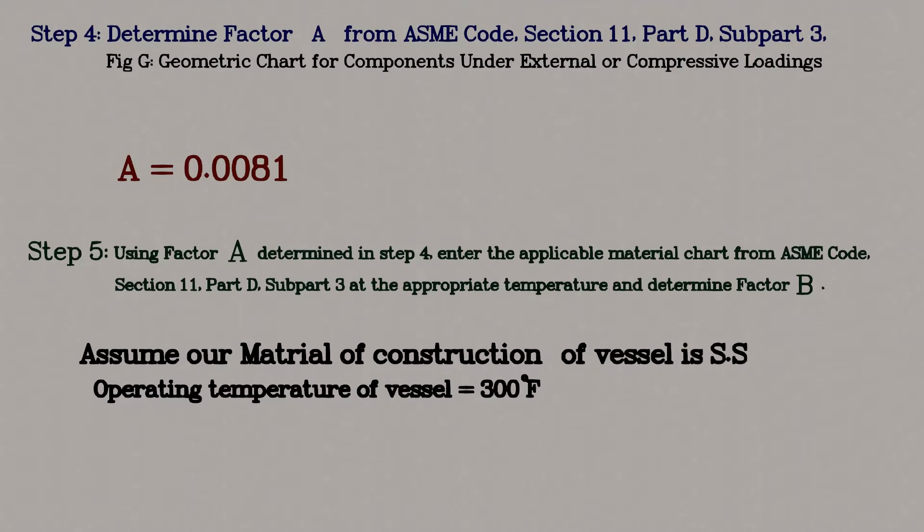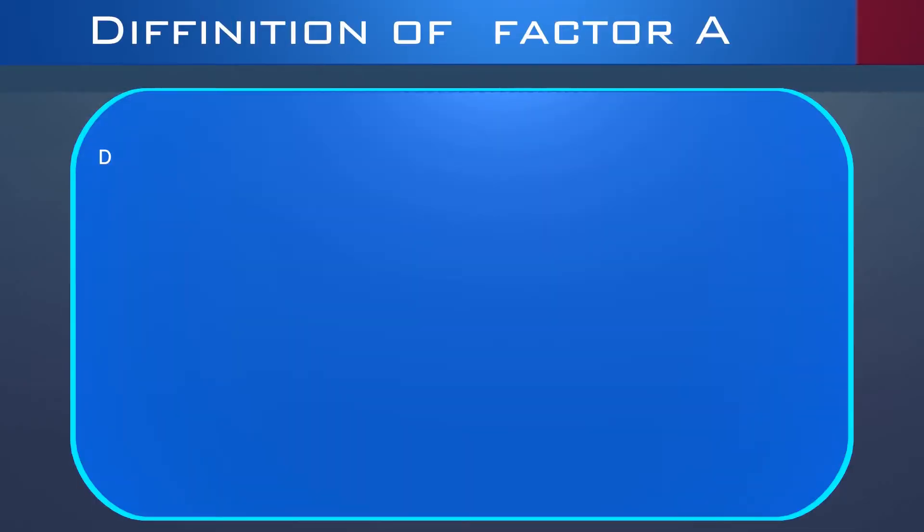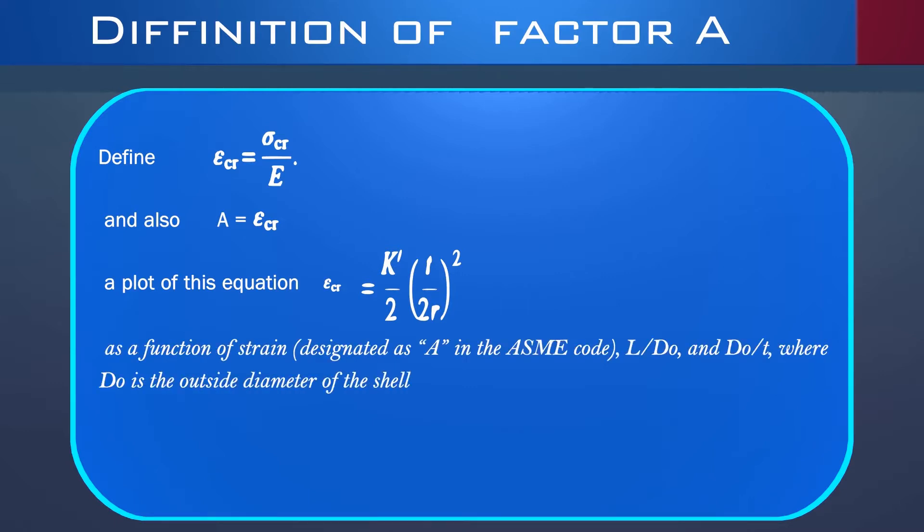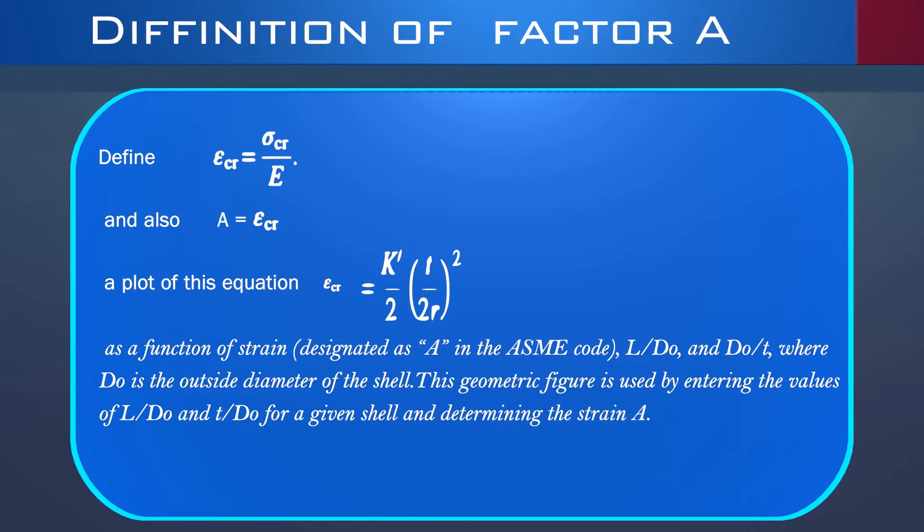Before the iteration of these factors A and B, let's briefly define these factors. A detailed practical perspective and derivation will be provided in another video. We can define strain as equal to uniaxial stress over Young's modulus, and also we can put A is equal to strain. The plot of this resultant equation will give rise to the curve for factor A. Here k' is a buckling coefficient with pressure on sides and ends, and r is the radius of the vessel. This brief definition is for the sake of concept.